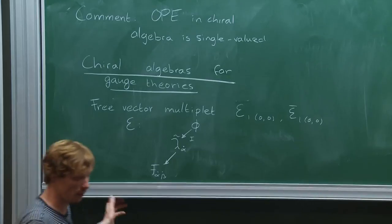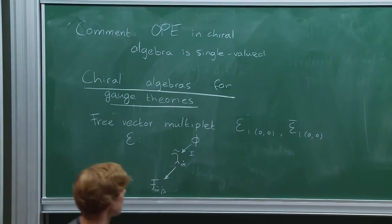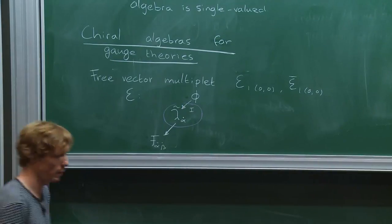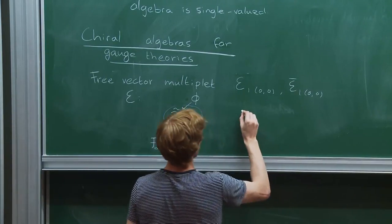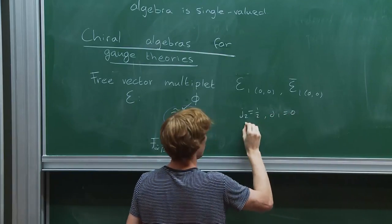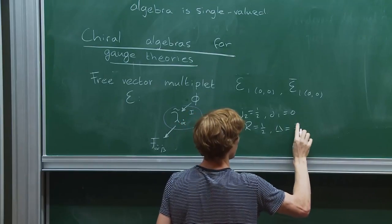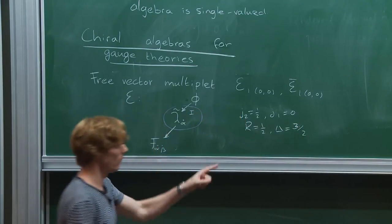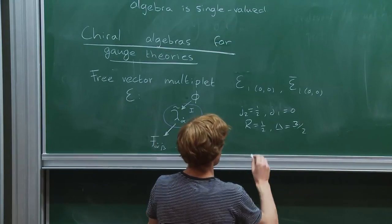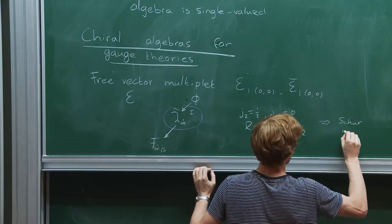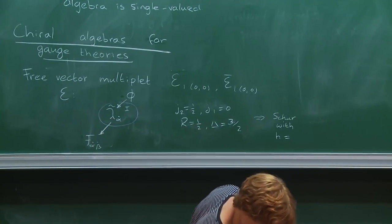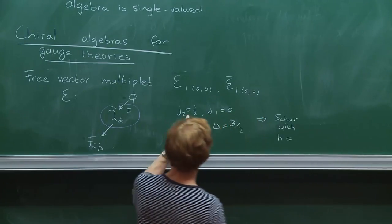Which one is Schur? There is a Schur operator in this multiplet. The scalar φ is not Schur because it is an R-symmetry singlet. The field strength component is also not Schur because it's an R-symmetry singlet. In fact, the Schur operator is the gaugino. It has J₂ = 1/2, J₁ = 0, R = 1/2, and Δ = 3/2. That gives me a Schur operator with dimension h = Δ + J/2 = 1.